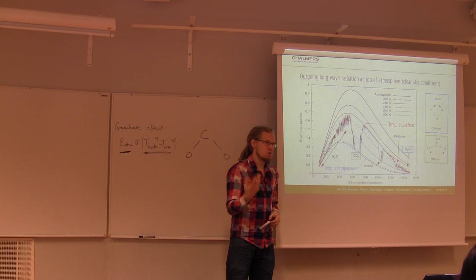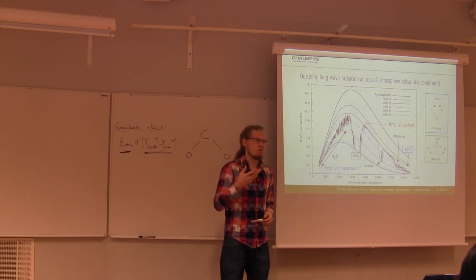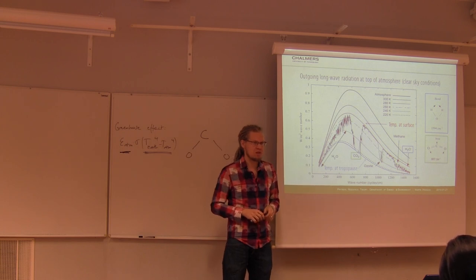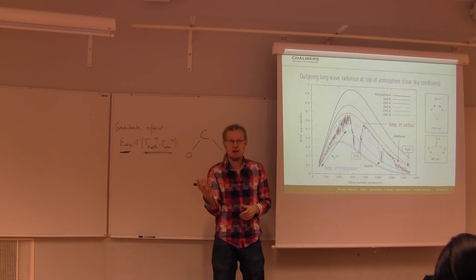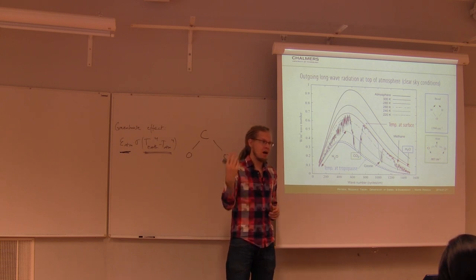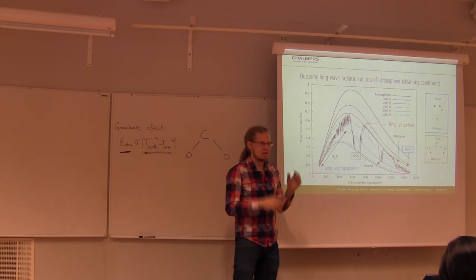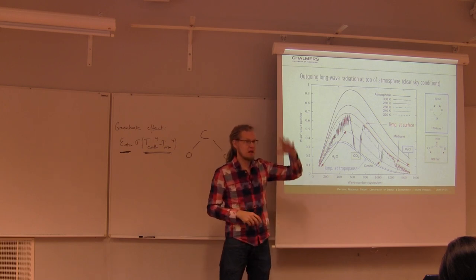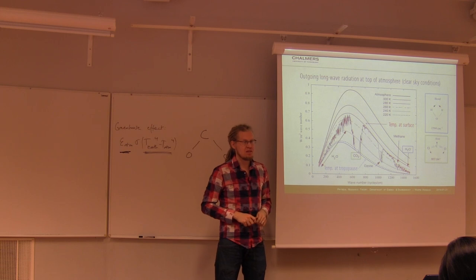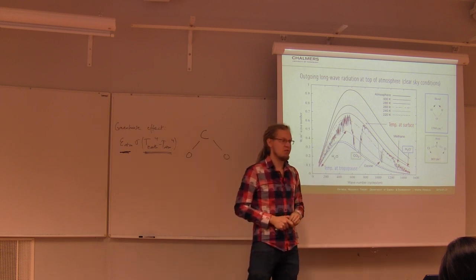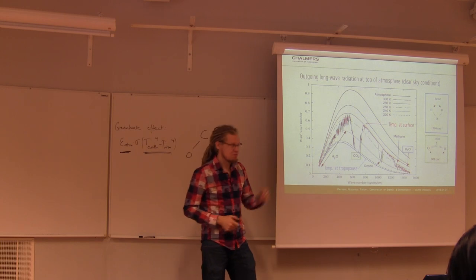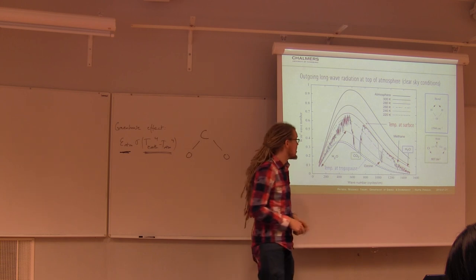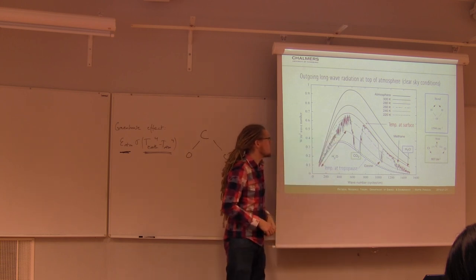One of the most important climate feedbacks is how warming of the Earth affects cloud formation. Clouds affect both the albedo and the emissivity, and the relation between the two depends on where the clouds are. Higher clouds and lower clouds have different effects on the climate. But we'll come back to that on Friday. This diagram is for conditions without clouds.